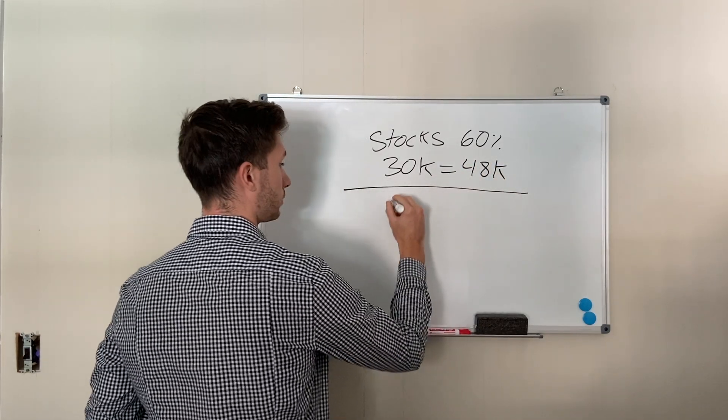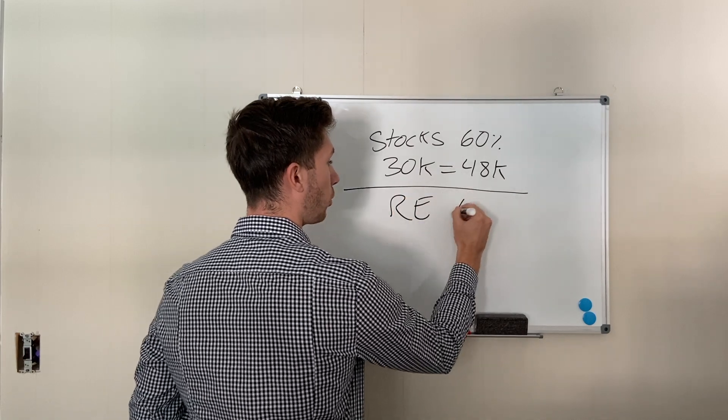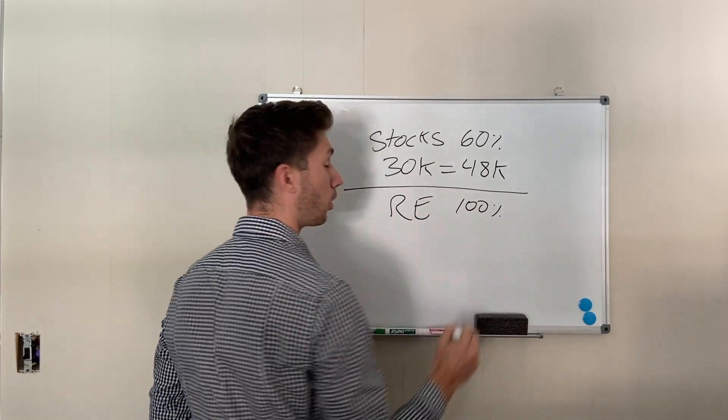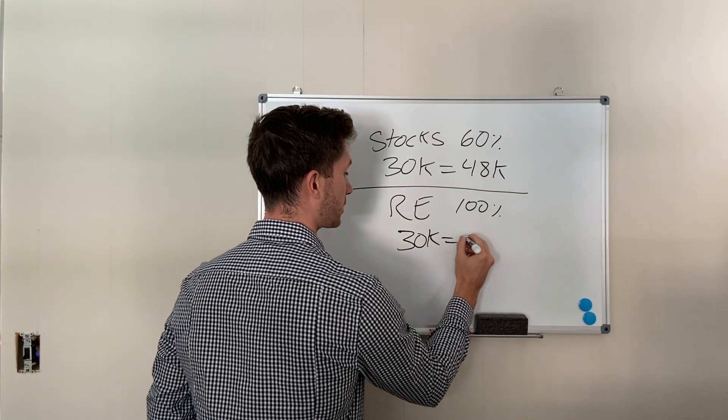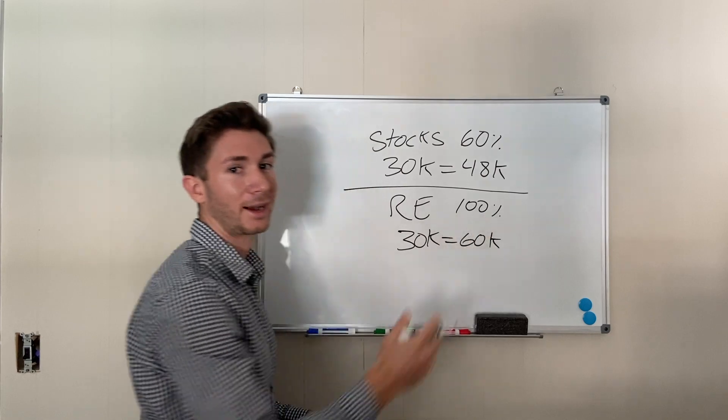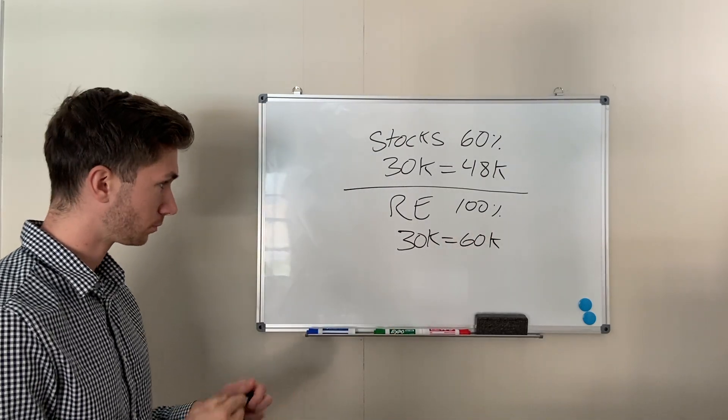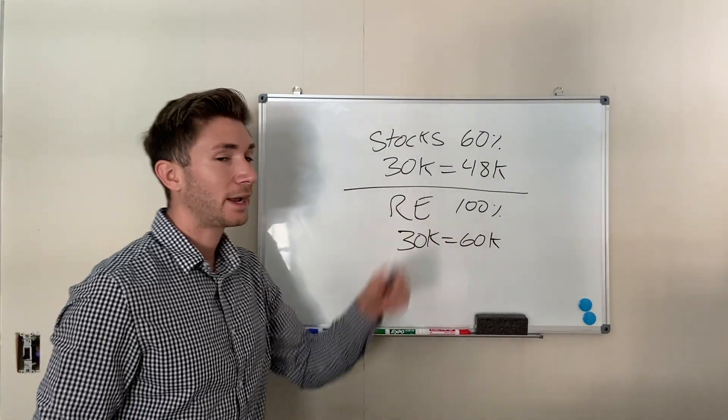Real estate had the one hundred percent ROI. Again, I'll put thirty thousand dollars in there. And that's going to come out to sixty thousand dollars. I'm rounding down. I know the actual number was sixty-one thousand dollars.